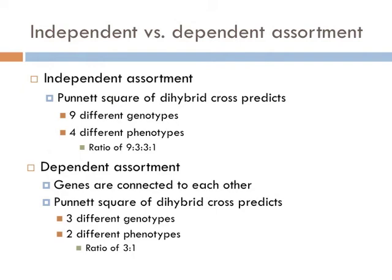Mendel was a glutton for punishment, because not only was he content figuring out how a single gene was inherited, he conducted another experiment and tried to predict what the ratio would look like for two different genes. But it was important to figure out how genes are related to each other. There are two distinct possibilities for how the alleles of these two different genes would be transmitted to their offspring. The first possibility was that an allele for seed shape and an allele for seed color present in each parent would separate from one another and be transmitted independently. This hypothesis is known as independent assortment, because the two alleles would separate and be sorted into gametes independent of each other.